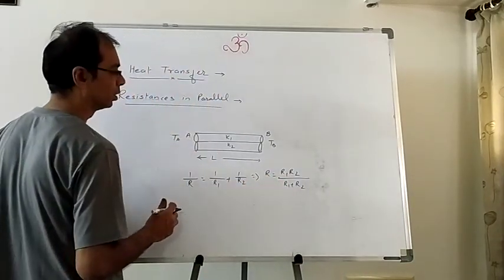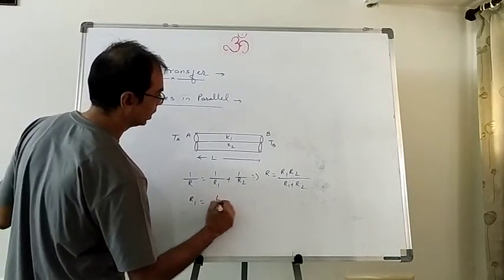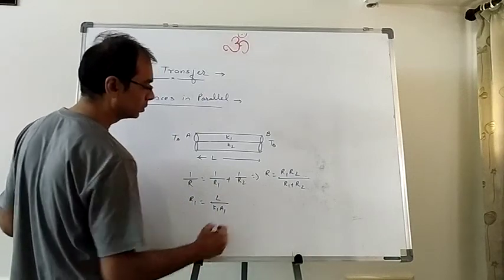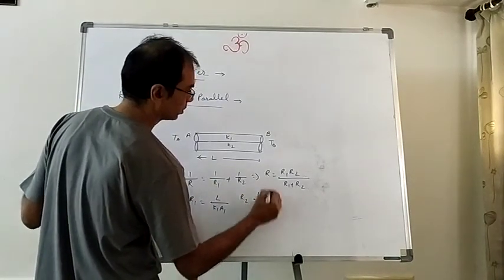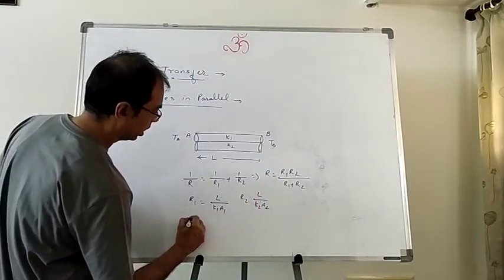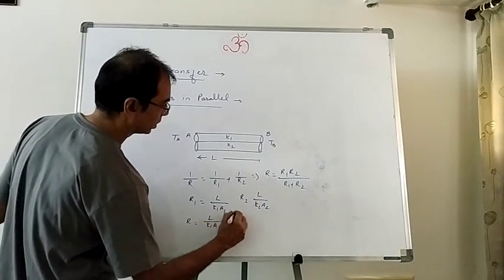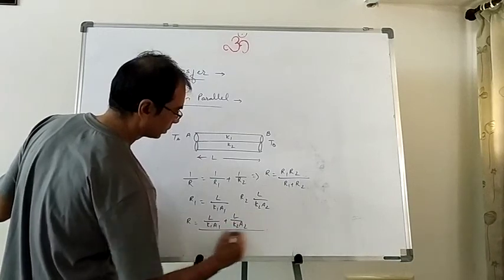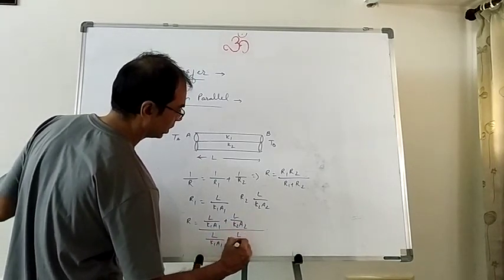Same thing we will do here. R1 is L/(K1·A1), and R2 is L/(K2·A2). Placing these into the formula, R equals [L/(K1·A1) × L/(K2·A2)] divided by [L/(K1·A1) + L/(K2·A2)].